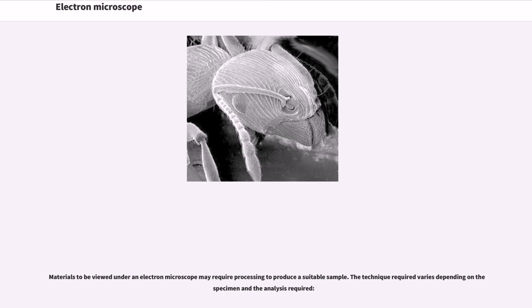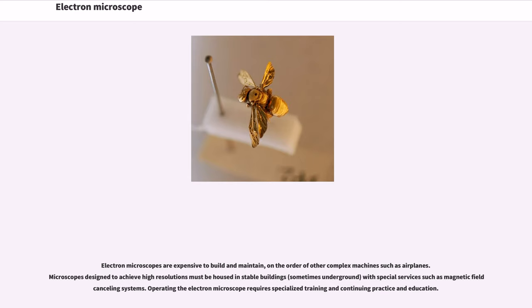Materials to be viewed under an electron microscope may require processing to produce a suitable sample. The technique required varies depending on the specimen and the analysis required. Electron microscopes are expensive to build and maintain,